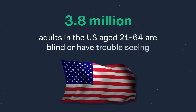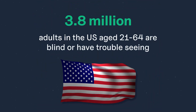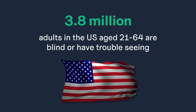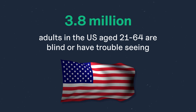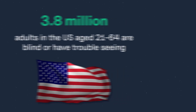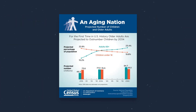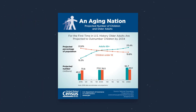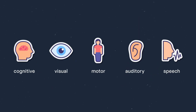In the United States alone, 3.8 million adults aged 21 to 64 are blind or have trouble seeing, even with glasses. And with an aging population, these numbers will increase in the upcoming years. So, the need for accessible websites is more important than ever.